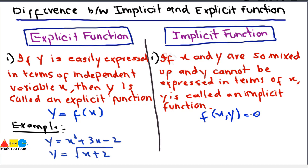In the implicit function, x and y are mixed up together. That's why we consider both x and y variables in the function. For example, x squared plus y squared minus 1 equals 0. This is one example.